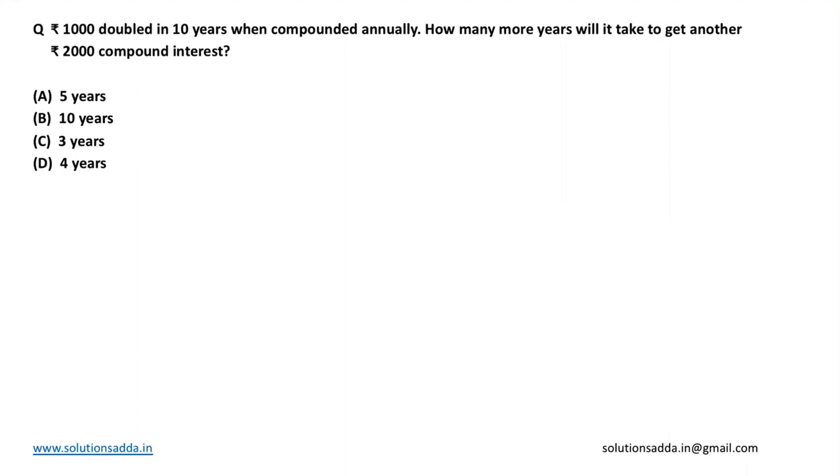This is an aptitude question based on compound interest. Rupees 1000 doubled in 10 years when compounded annually. How many more years will it take to get another rupees 2000 compound interest? Options are 5 years, 10 years, 3 years, and 4 years.